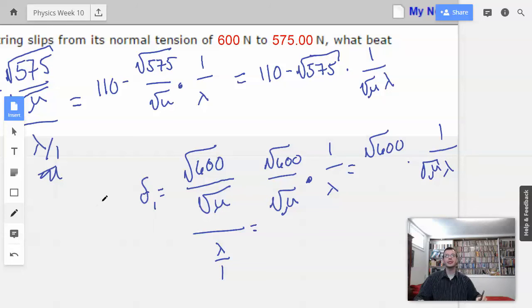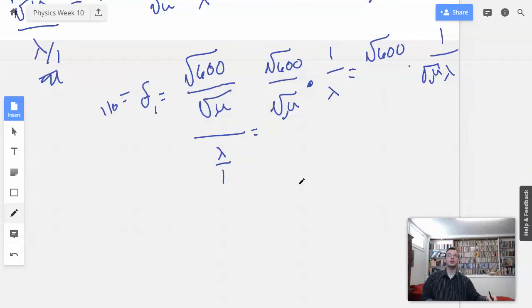And so I'll have square root of 600 times 1 over square root of mu times lambda. We know this guy over here equals 110. So this is just using what they told us about frequency 1. So when I rearrange it using this guy and these guys, I'm going to have 110 divided by square root of 600 equals 1 over square root of mu times lambda.